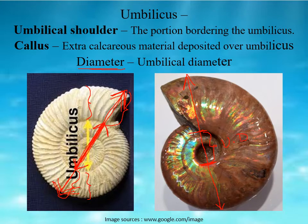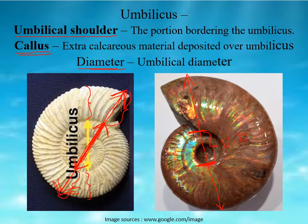The umbilical diameter is always less than the diameter. The bordering portion of the umbilicus — shown here as the red line — is known as the umbilical shoulder. In some cephalopods, the umbilicus portion is covered by extra calcareous material secreted by the cephalopod itself, known as callus or umbilical callus. However, umbilical callus is not observed in all cephalopods — it is found only in a few; in most cases the umbilicus is open.